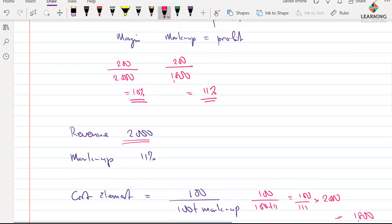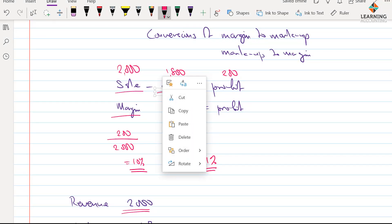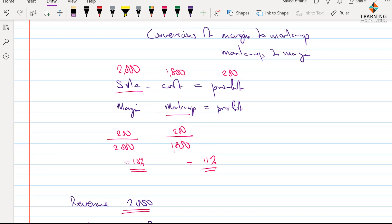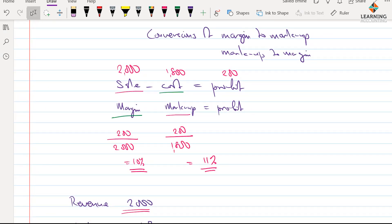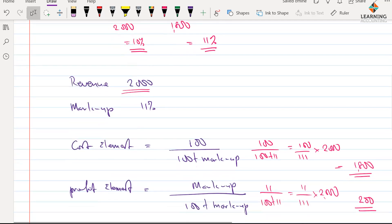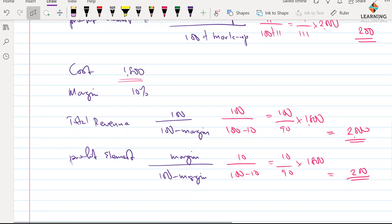So, this should always make you have it at the back of your mind that whenever, in a particular question, you're given revenue and markup, you should know how to go about it. Or, you're given cost and margin, you should also know how to go about that. I'm just going to use a different marker here just to highlight it differently. You should know how to treat that. And, I believe this would help you one way or the other in any aspect of accounting as you move down your professional career.